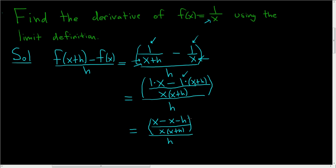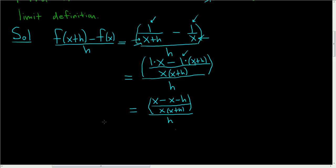Let's keep going. So this is equal to, looks like the x's cancel. Yep. And so we have negative h over x times x plus h, and all of this is being divided by little h.